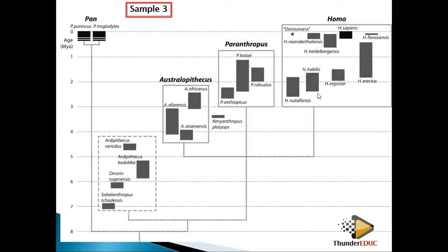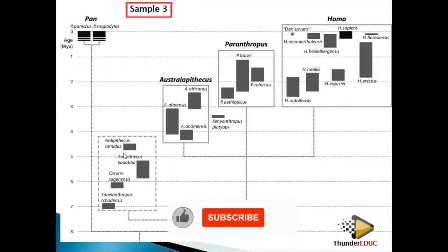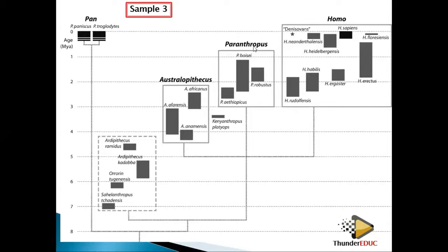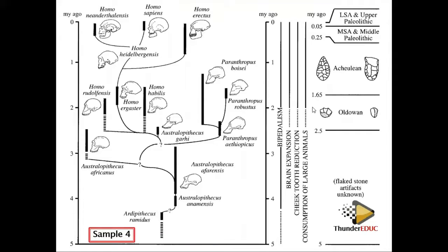How many genera are here? Count: one, two, three — Ardipithecus three, Australopithecus four, Paranthropus five, Homo six — there are six genera. To find which organisms existed at the same time as Paranthropus boisei, draw a horizontal line through its range. Whatever the line covers means those organisms also existed at the same time.